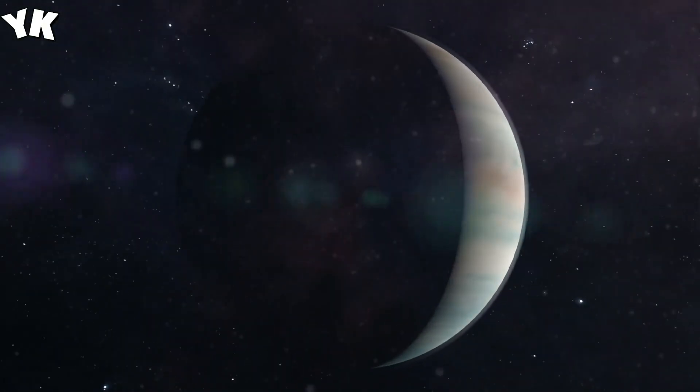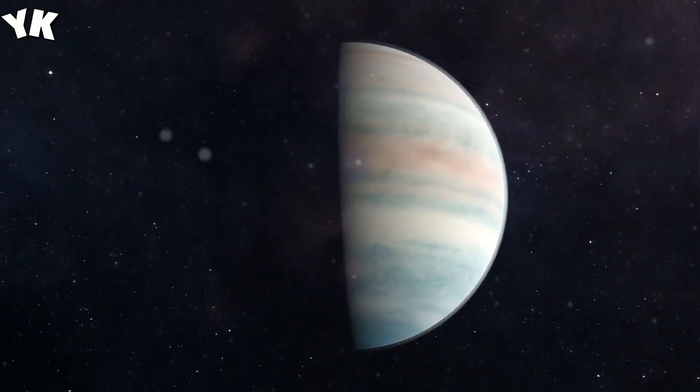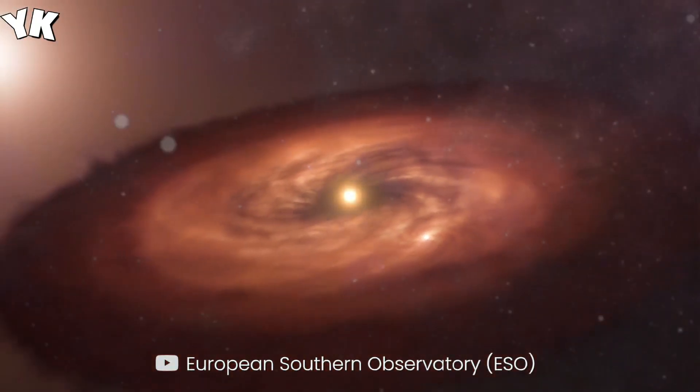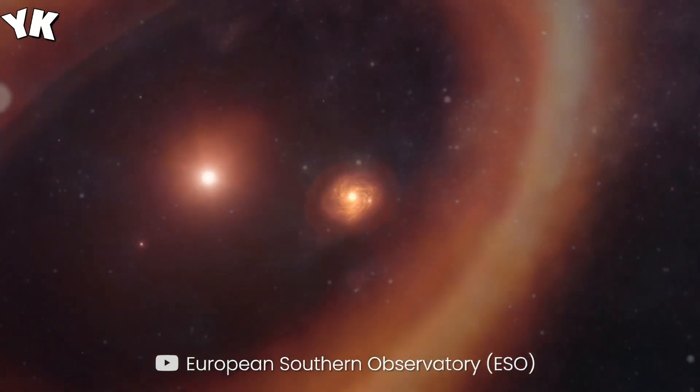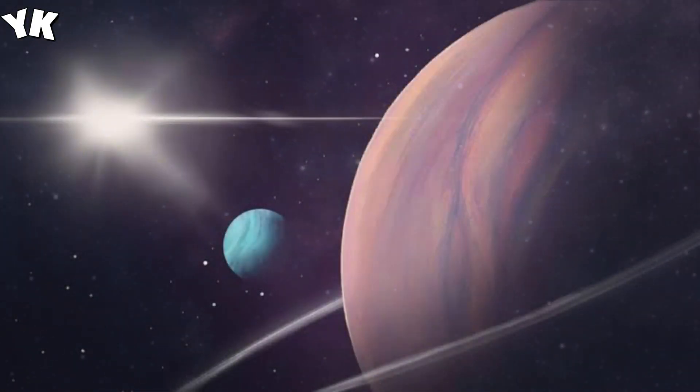Exomoons: Live moon formation. For the first time in history, astronomers have spotted a moon-forming disk around exoplanet PDS-70C, giving us a front-row seat to watch moons form in real time. It's a groundbreaking discovery in the world of exoplanets.